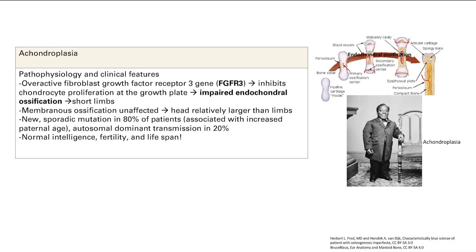Let's talk about bone pathology. The first bone pathology is achondroplasia. This is due to overactive fibroblast growth factor receptor 3, FGFR3 — that's a key term you want to know. What FGFR3 does is it inhibits chondrocyte proliferation at the growth plate.